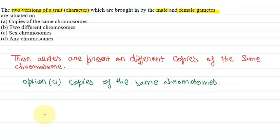Now option B, two different chromosomes. That will be contrary to option A. So this will be wrong.